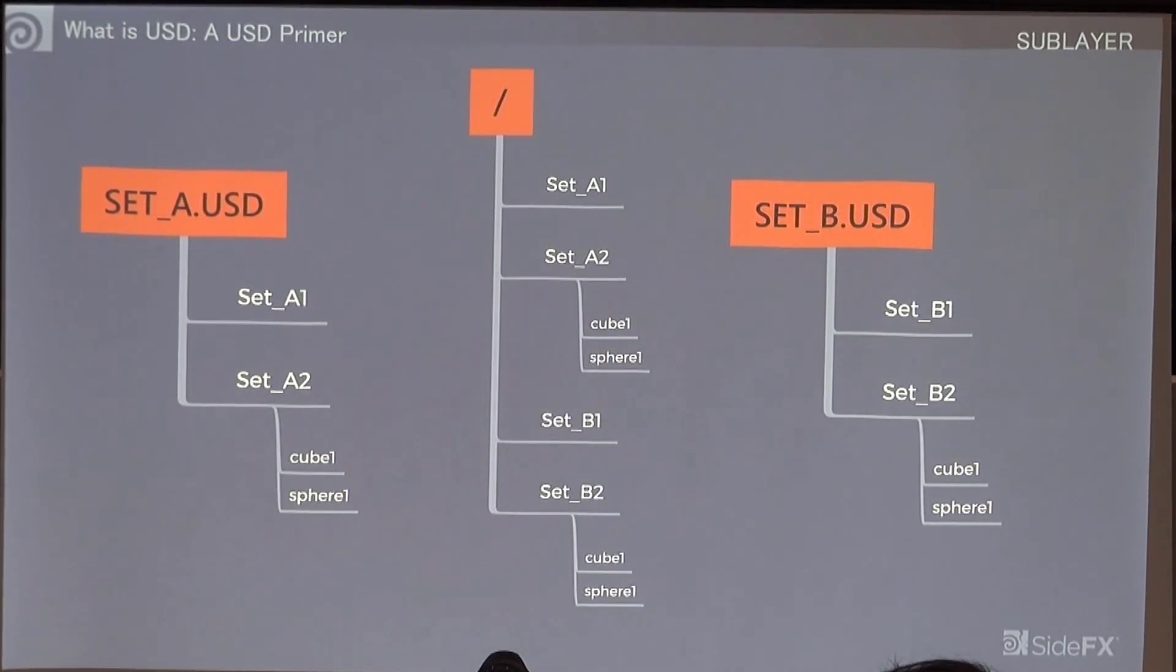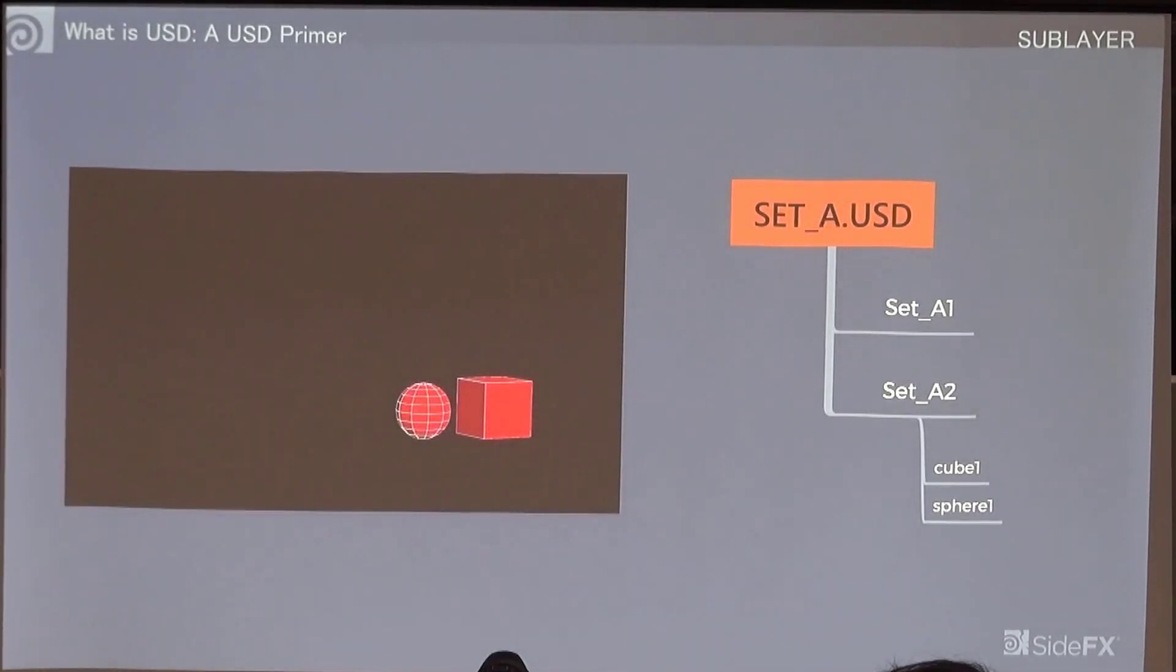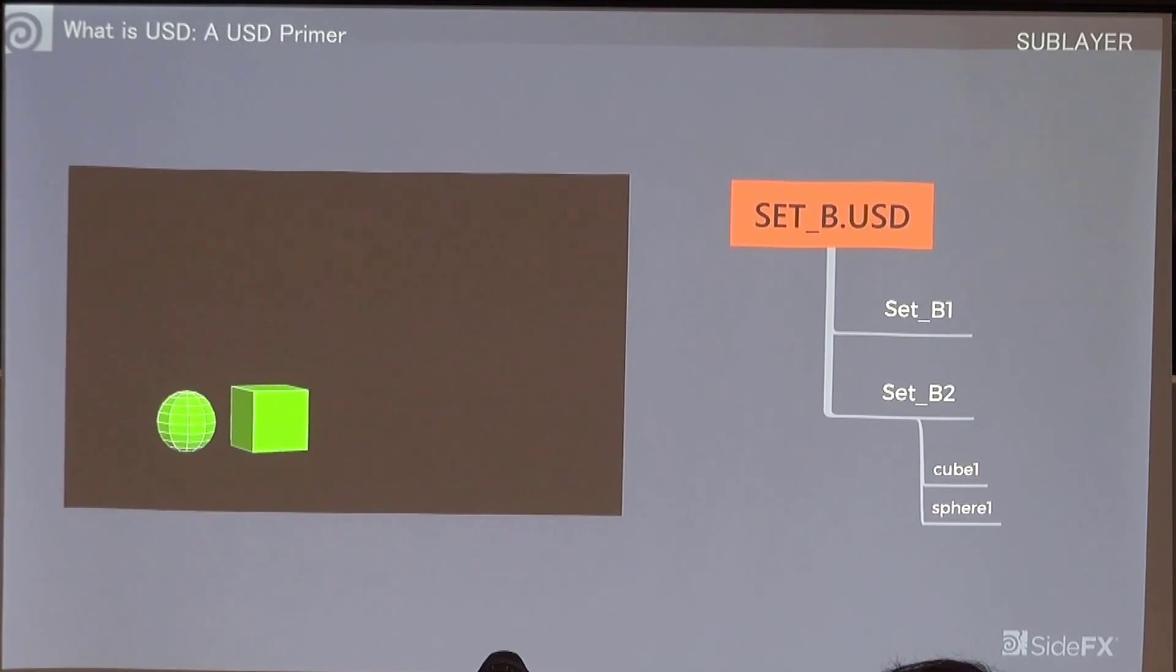Just a quick visual representation of that. Here's set A, which has a red sphere and a red box, and set B looks like this.